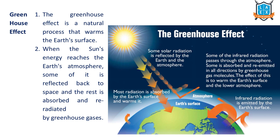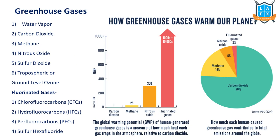Let us understand the greenhouse effect. Greenhouse gases in the earth's atmosphere absorb incoming solar radiation — which we call insolation — and this increases temperatures in the lower atmosphere. That effect is called the greenhouse effect. In summary: greenhouse gases cause the greenhouse effect, the greenhouse effect leads to global warming, and global warming can cause climate change.